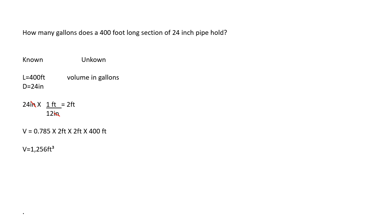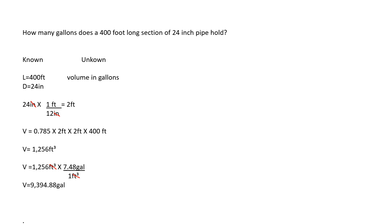There are 7.48 gallons in a cubic foot. To get the units to convert, the 7.48 gallons will go on top and the 1 cubic foot will go on the bottom, so that when you do your multiplication the cubic feet will cancel out and you'll be left with gallons. When you multiply 1,256 cubic feet by 7.48 gallons per cubic foot, you're left with an answer of 9,394.88 gallons, which will probably round to 9,395.